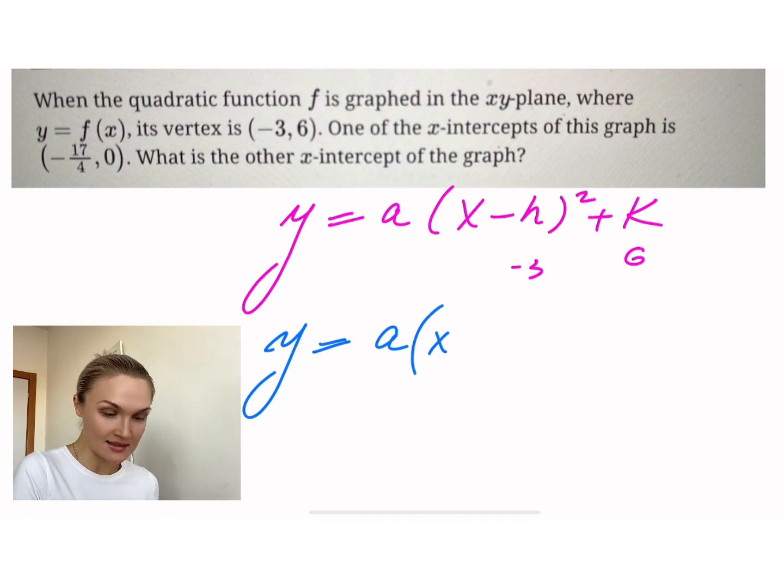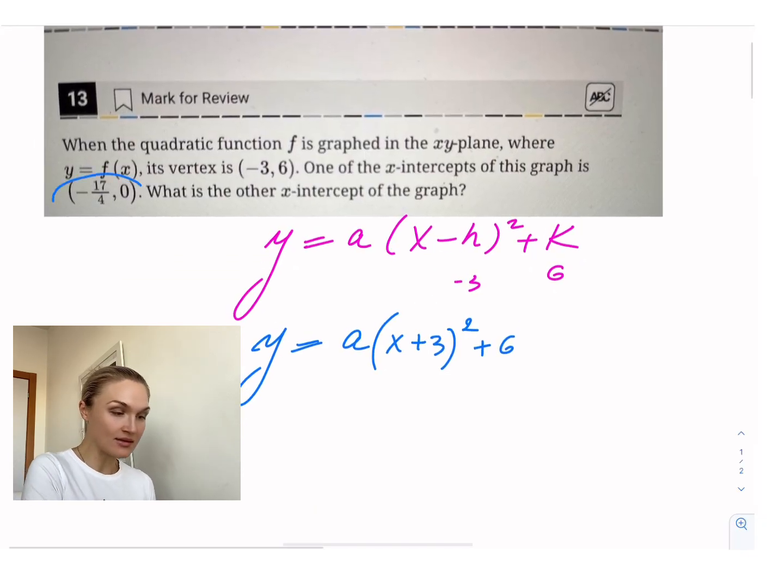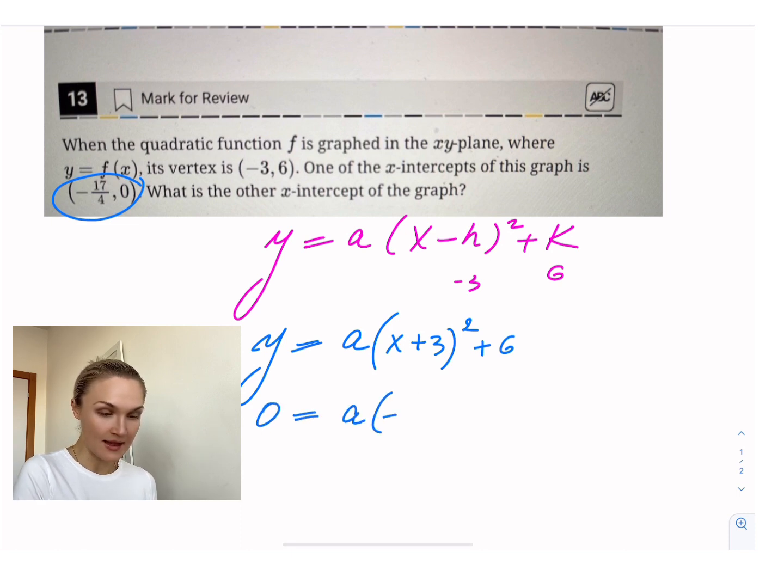Especially on harder SAT questions, they will always give you a way to figure out your a. So this is x plus three, crucial step here, right? Plus six. Next thing, we're given this coordinate, which we can plug in: zero equals a times negative 17 fourths plus three squared plus six.